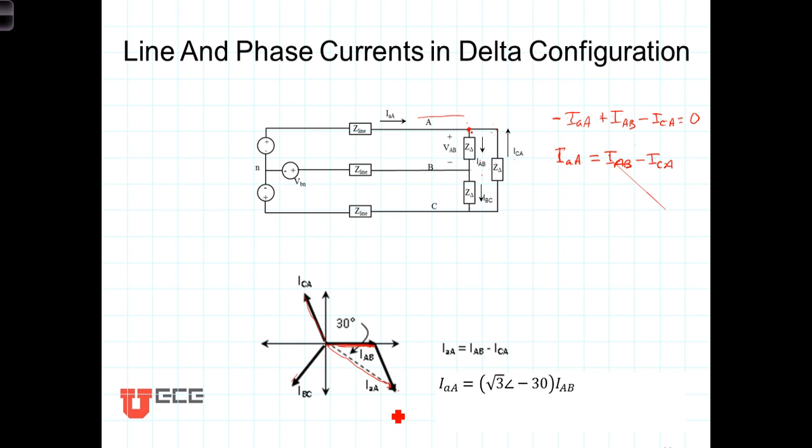Once again, it's a simple little trig calculation to demonstrate that the length of this phasor here, or the magnitude of the line current, is square root of three times as big as the phase currents associated with that node.